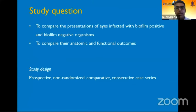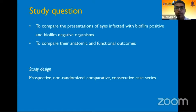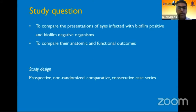In this study, we aimed at comparing the presentation of eyes infected with biofilm positive and biofilm negative organisms and also comparing their anatomic and functional outcomes. A good functional outcome was defined as visual acuity achieved more than 20/200 at the last visit at resolution of endophthalmitis, in par with our previous endophthalmitis studies. A good anatomic outcome was defined as absence of retinal detachment, absence of hypotony, and structural integrity of the eyeball at the end of follow-up. This was a prospective non-randomized comparative consecutive case series.